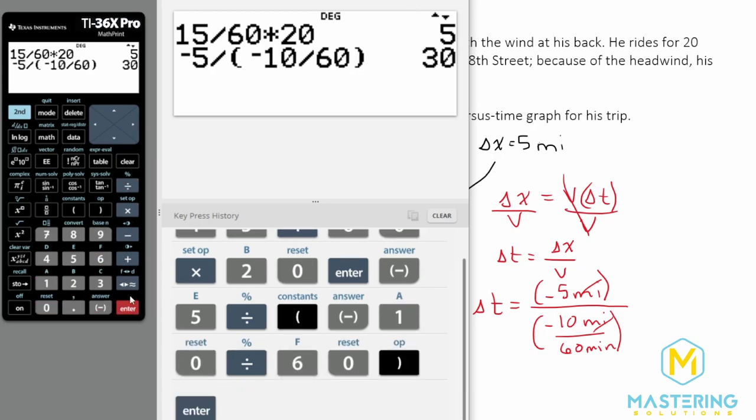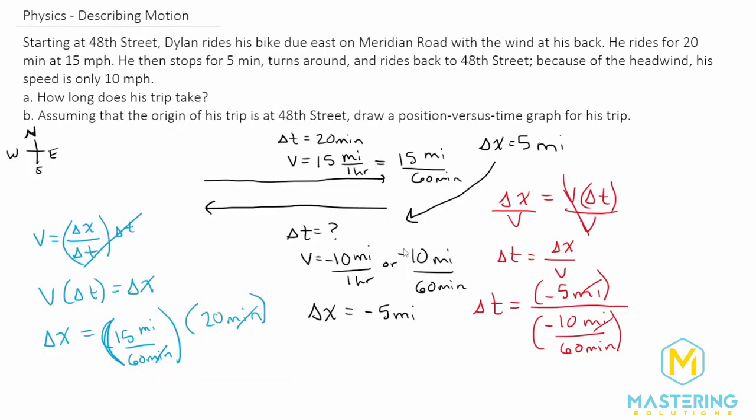And we have 30 was how long, because of the slower speed that he was going with the wind, it took him longer. So the first section, they told us that he went 20 minutes. He stopped for five minutes. And then we just found that the last section took him 30 minutes. And so if we add all these together, we have 25 plus 30. So we have 55 minutes for how long it took him.